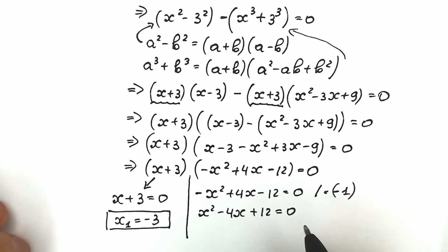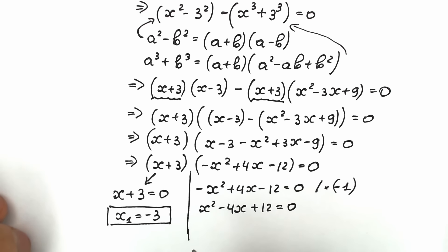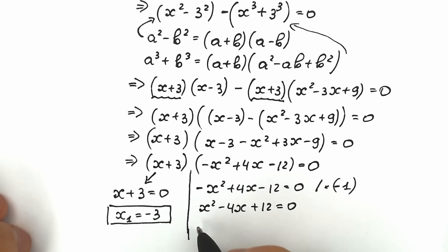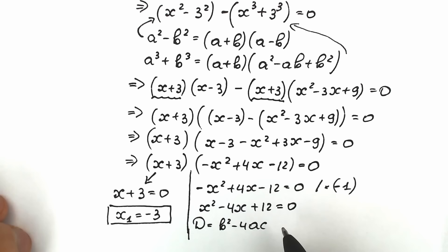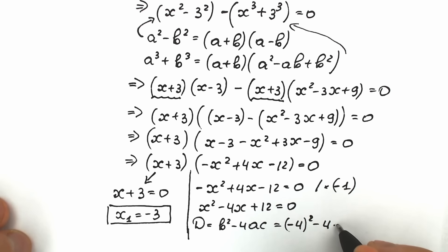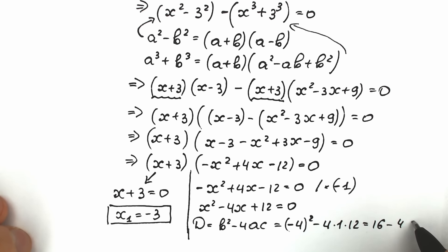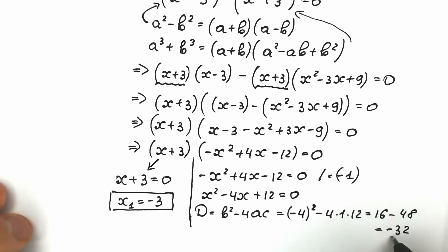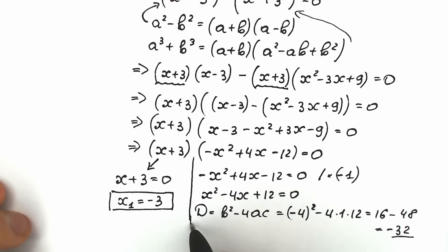Let's find the discriminant. The discriminant equals b squared minus 4ac. Plugging in the values: b squared is minus 4 squared equals 16, minus 4 times 1 times 12 equals 48. So the discriminant equals 16 minus 48 equals minus 32. Since the discriminant is negative, this implies we will have two complex roots.